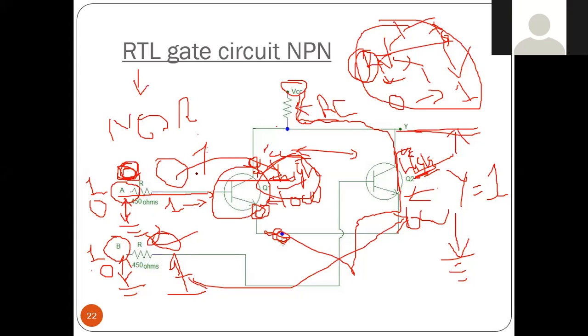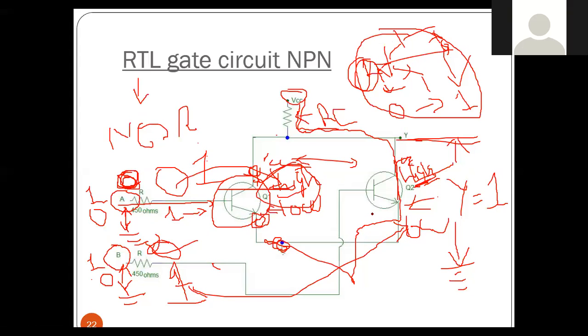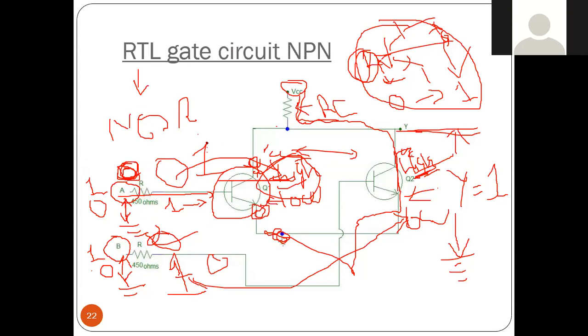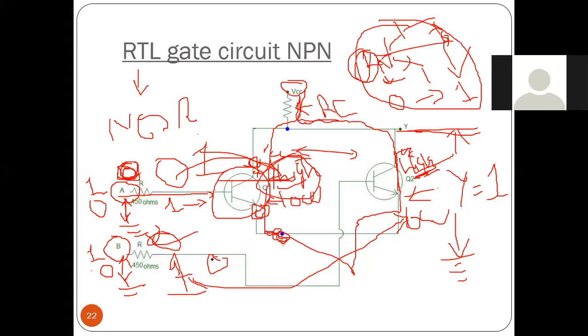Same way, if I apply 1 in A and 0 in B, due to this 1, Q1 will be on so current will flow through VCC, through RC, through this Q1 to ground. Although Q2 will be open because I have applied 0 at that time.